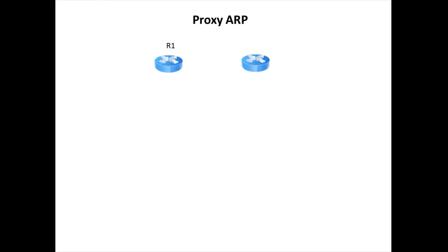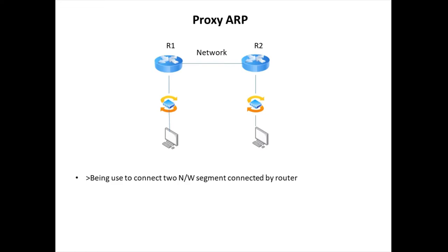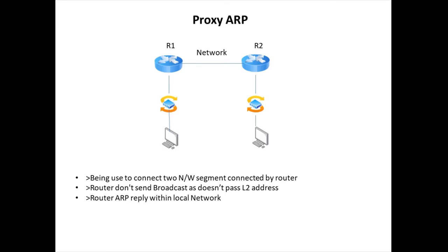Let's have a small diagram for this. We have Router 1 and Router 2 — it is a small network separated by routers. Proxy ARP is implemented to connect two different network segments connected by a router. Initially a device sends an ARP request as a broadcast, but a router cannot forward broadcast messages, so Proxy ARP is enabled by default and comes into the picture. The router between both networks will work as a Proxy ARP and reply to their own local network.